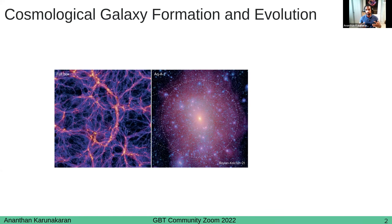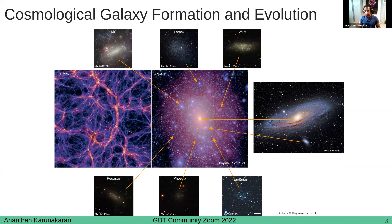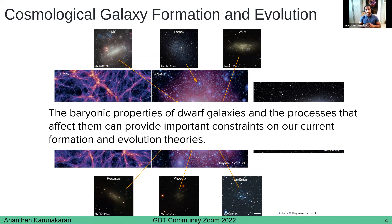If we paint some of the faintest dwarf galaxies we know from the local group, as well as the central galaxy — here I've chosen Andromeda or M31 as the central halo, with a selection of local group dwarf galaxies — we can see there's a clear diversity in this population. Some are very faint and low in mass, while others are much more massive, with different morphologies and colors. All of this tells us about their evolutionary histories. Having a broader understanding of their baryonic properties and the processes that affect them provides constraints on our current formation and evolutionary theories.